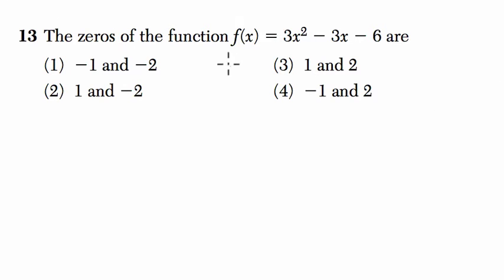The zeros of the function f(x) = 3x² - 3x - 6 are which of the following? Let's put some context to this problem really quickly.